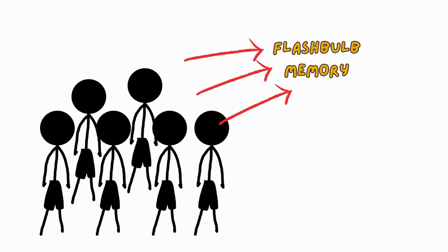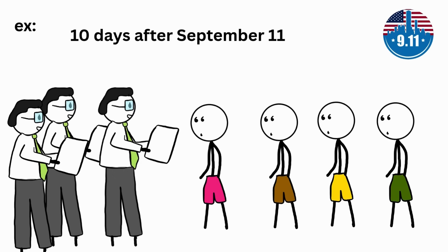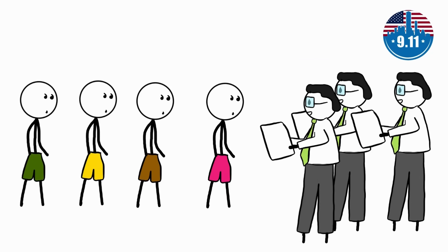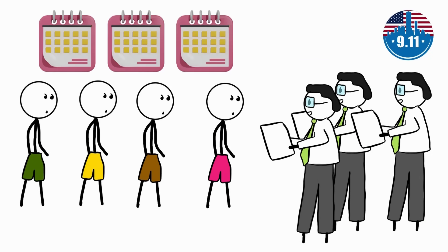Unfortunately, flashbulb memory glitches are actually more common than you may think. For example, 10 days after September 11th, a group of researchers interviewed several people about their recollection of events and experiences. Then, they conducted a follow-up interview every year for the next couple of years.